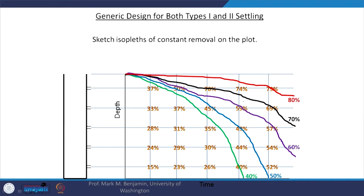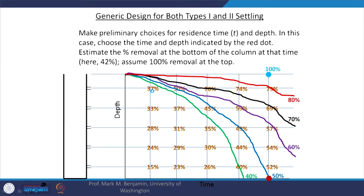We got data, plotted the percentages, and from those percentage removals we can get what are called isoplets — lines of constant removal, such as 30, 40, 50, 60, 70, 80 percent. These are obtained by interpolating data measured at different depths. To use this, we choose a particular time and depth — the x-axis is time.